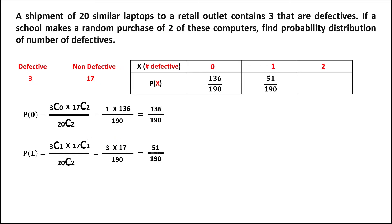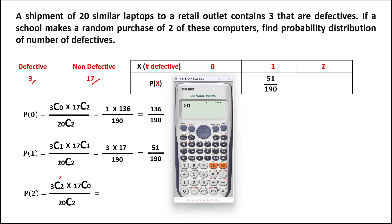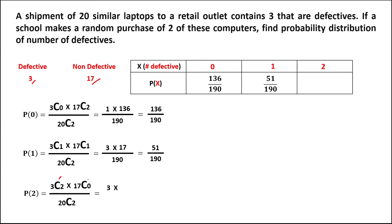For 2 defective computers: we choose 2 from the defective computers — 3 choose 2 — times 17 choose 0 for the non-defective computers, over 20 choose 2. Simplifying: 3 choose 2 equals 3, times 17 choose 0 equals 1, over 190. So 3 times 1 gives us 3 over 190. This is the probability for 2 defective computers.